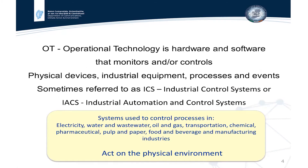Operational technology is hardware and software that monitors or controls physical devices, industrial equipment, processes, and events. Sometimes referred to as ICS, industrial control systems, or IACS, industrial automation and control systems.